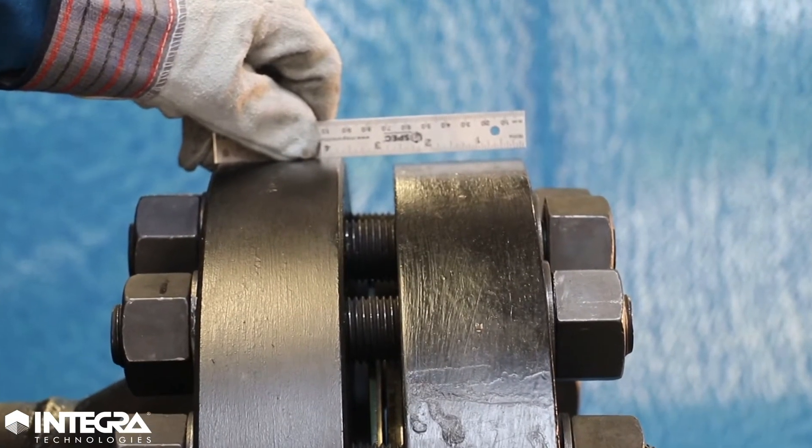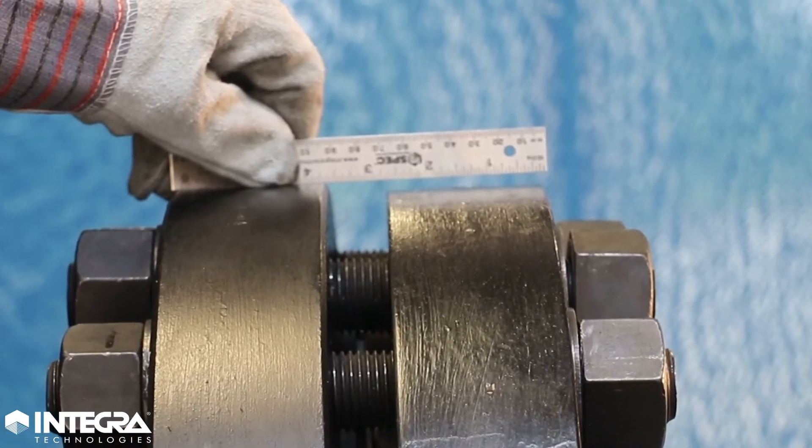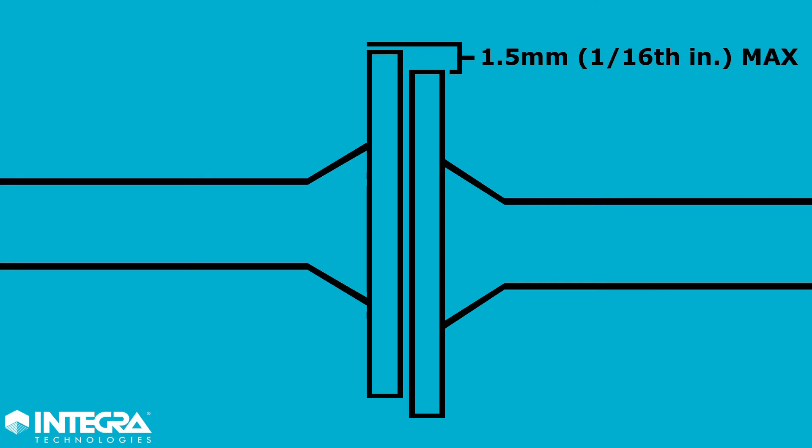Tolerance is usually measured by placing a straight edge on the outside diameter of one flange and extending it towards or bridging over to the mating flange. This is done at four points along the flange, approximately 90 degrees from one another. The tolerance is 1.5mm, or 1/16th of an inch at any point.